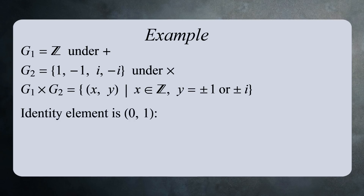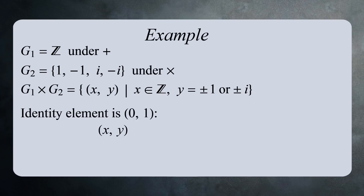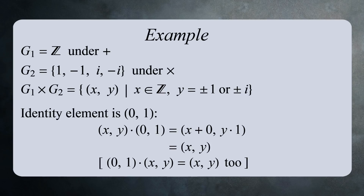The identity element in this group is (0, 1). For example, if you combine (5, -i) and (0, 1), you add the first components to get 5, and you multiply the second components to get -i. So the product of (5, -i) and (0, 1) is (5, -i). We can check that this works for any element: if (x, y) is an element in the direct product, then (x, y) · (0, 1) = (x+0, y·1) = (x, y). So (0, 1) is the identity element.